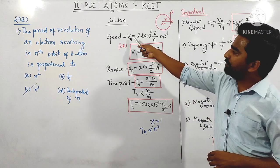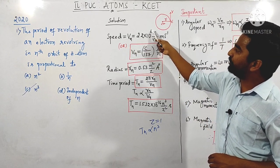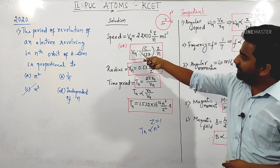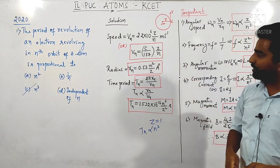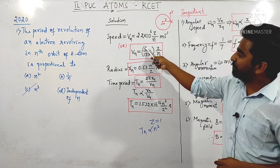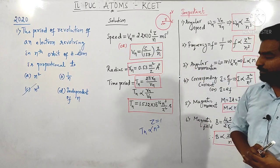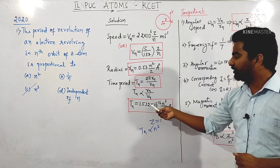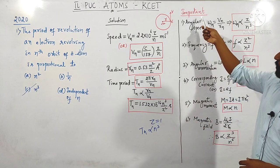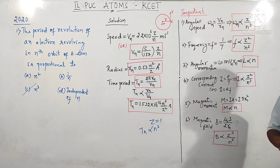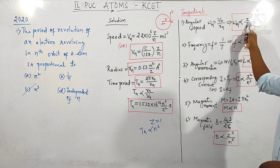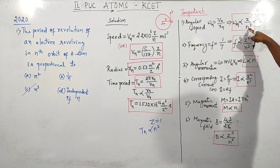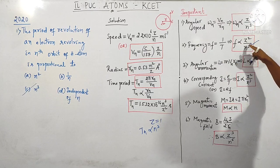The speed of the electron in the first orbit is 2.2 × 10⁶ m/s. The radius of the first orbit of hydrogen atom is 0.53 Ångström. Speed can also be calculated as C/137, where C is the speed of light, that is 3 × 10⁸ m/s. The time period of the electron revolving in the nth orbit formula gives 1.532 × 10⁻¹⁶ seconds for the first orbit. For NEET and JEE Mains: angular speed is proportional to Z²/n³, where Z is atomic number and n is the principal quantum number. Similarly, frequency is proportional to Z²/n³.